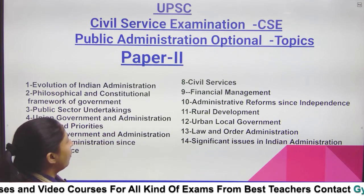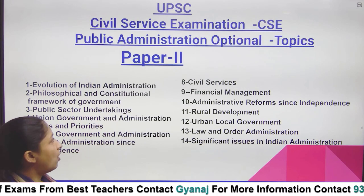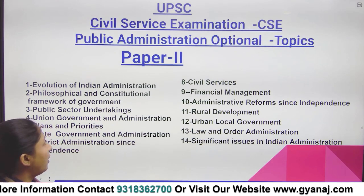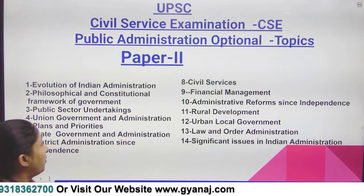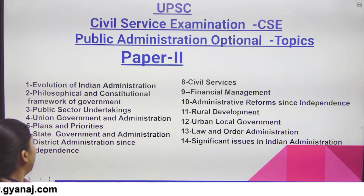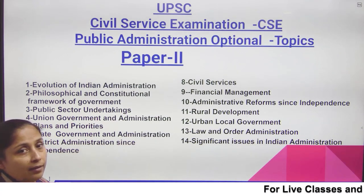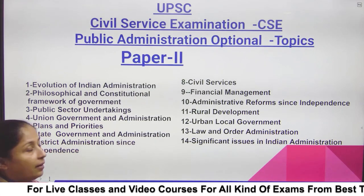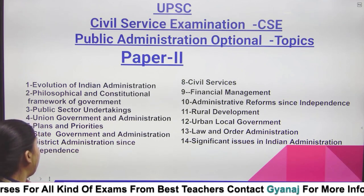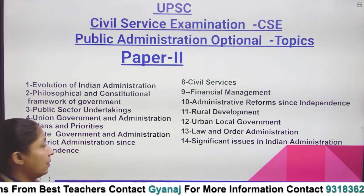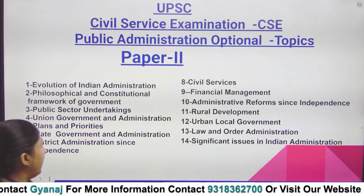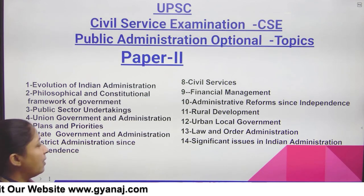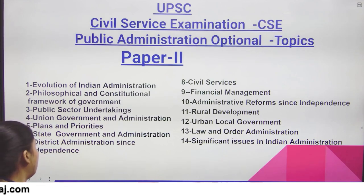Here are the topics of paper 2. Number 1 is evolution of Indian administration, number 2 is philosophical and constitutional framework of government, number 3 is public sector undertaking, number 4 is union government and administration, number 5 is plan and priorities, number 6 is state government and administration, number 7 is district administration since independence.